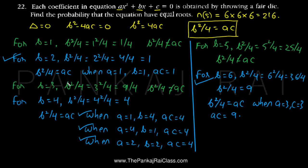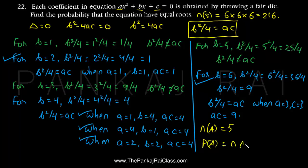So there are 5 such possible values for a, b, and c for which b²/4 = ac, meaning b² = 4ac, meaning b² - 4ac = 0, meaning delta = 0. The number of favorable points in the event that the equation has equal roots is 5. Therefore, the probability is 5/216.